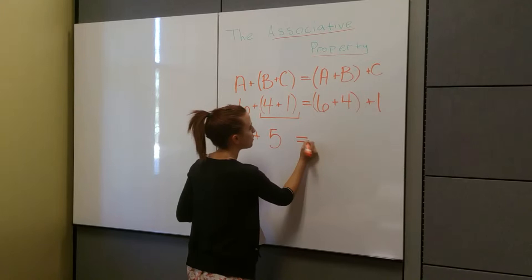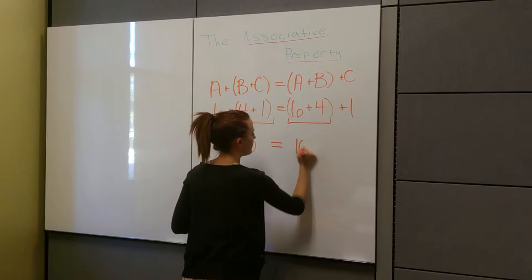And that's equal to our other side. Solve for these parentheses. 6 plus 4 is 10, and then we have to remember to add the 1 on the end there.